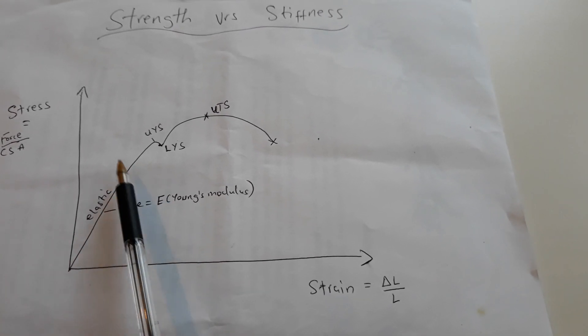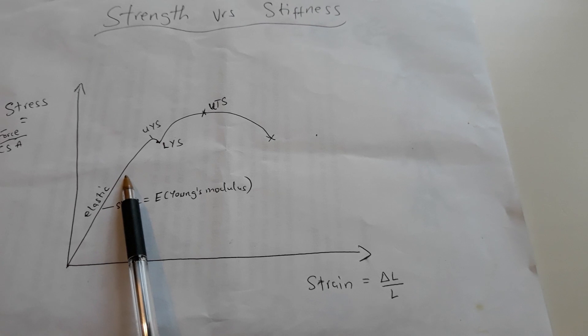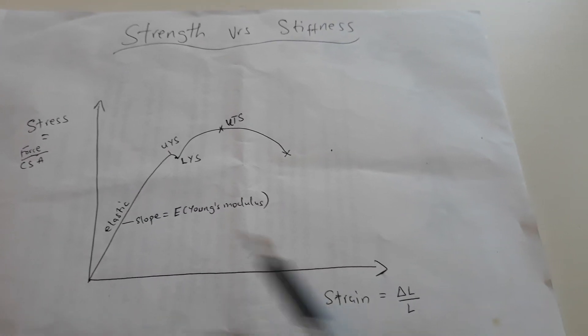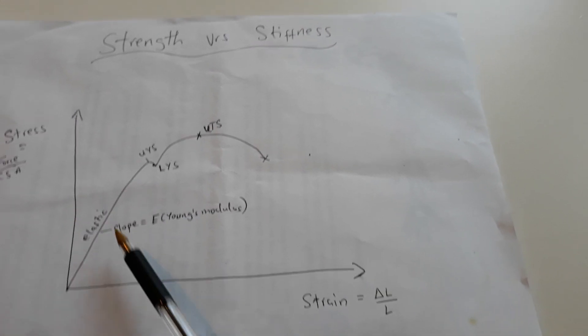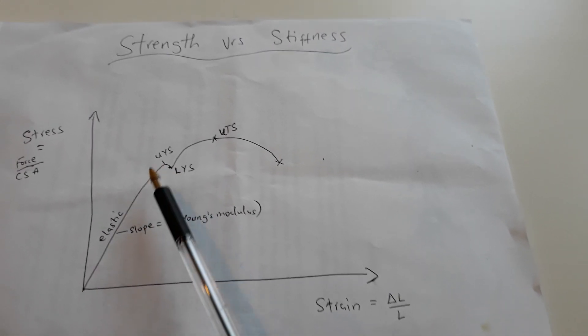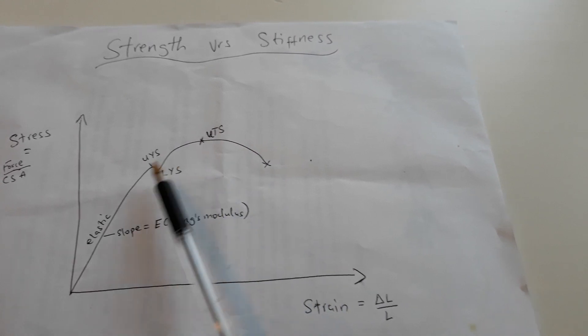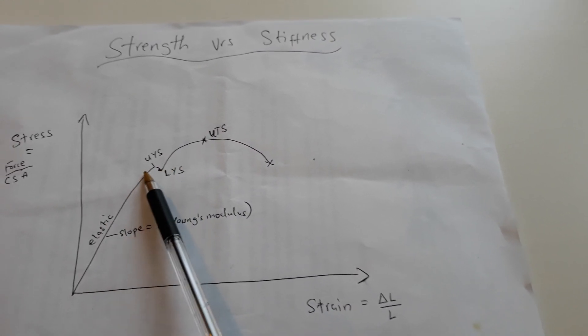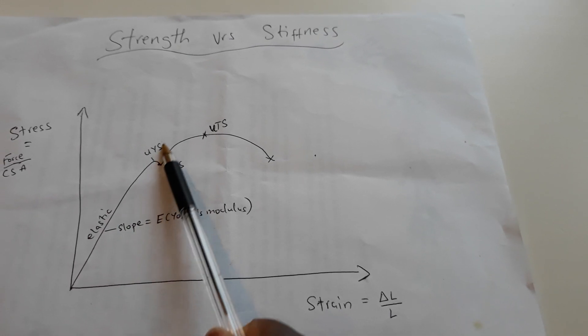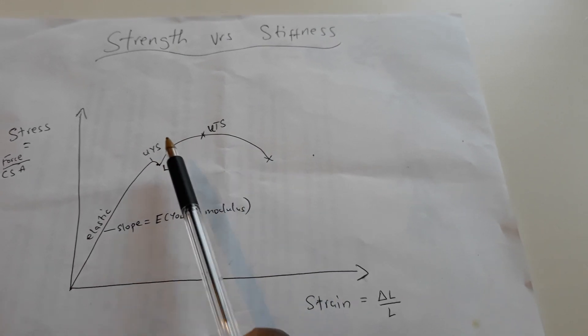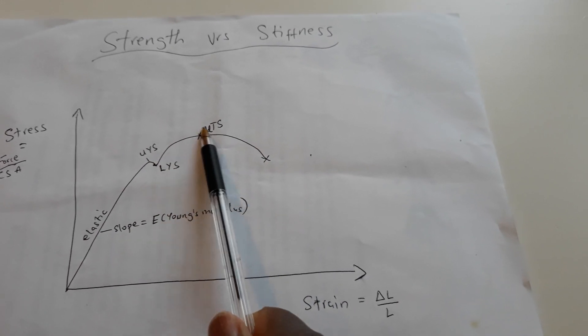Remember, we're talking about the elastic region now. With stiffness, we stay within the elastic region and how the material behaves. But with strength, we look beyond the elastic region—how much stress can it take before it starts to undergo plastic deformation or before it breaks.